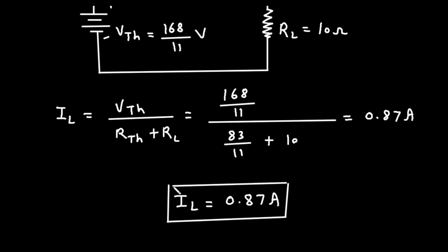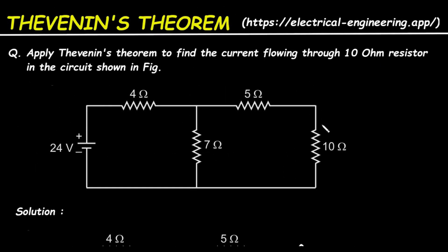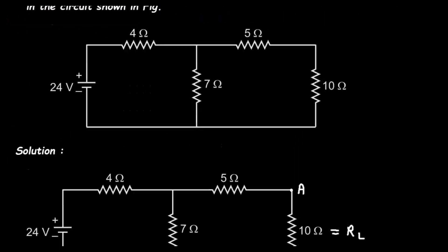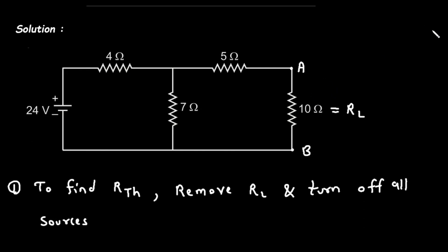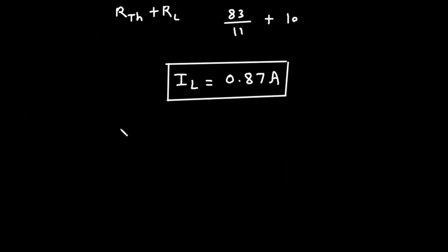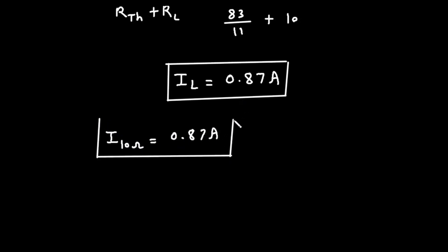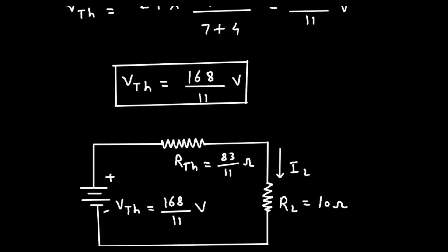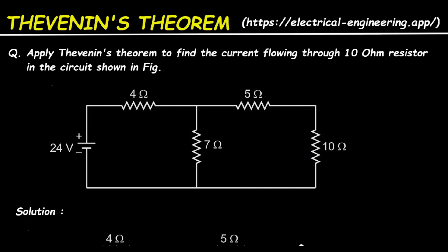Now what we have to find in this problem is the current through the 10 ohm resistor. The current through 10 ohm is IL, so I_10Ω is equal to 0.87 ampere. This is how we can find the current through a resistor by using Thevenin's theorem. Don't forget to like, share and subscribe to this channel. To get the notes, you can visit electrical-engineering.app. Thanks for watching.